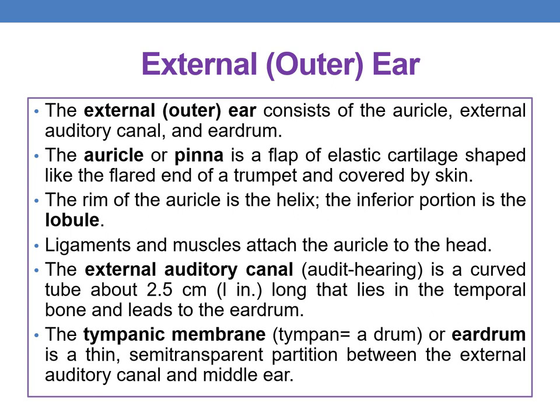The auricle, or pinna, is a flap of elastic cartilage shaped like the flared end of a trumpet and covered by skin. The rim of the auricle is the helix, and the inferior portion is the lobule. Ligaments and muscles attach the auricle to the head. The external auditory canal is a curved tube about 2.5 centimeters long that lies in the temporal bone and leads to the eardrum.